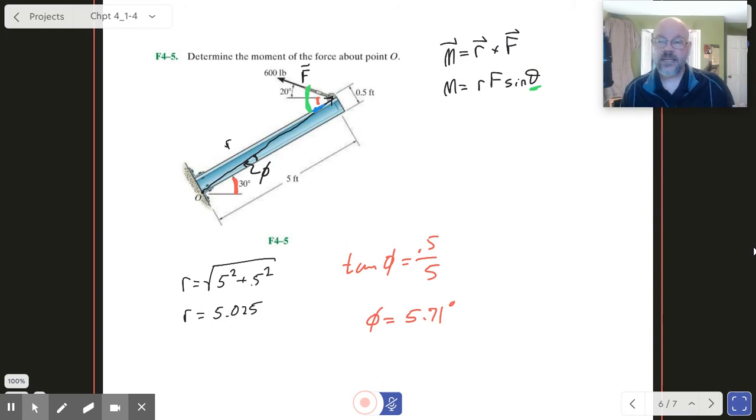There we go. Now we know r, we know F, we know the teeny tiny angle inside there, so we can package it all together at this point. So M, it's going to be the r, which is 5.025, times F, which was 600, times the sine of the 20 degree angle plus the 30 degree tilt of our beam plus that small angle, 5.71.